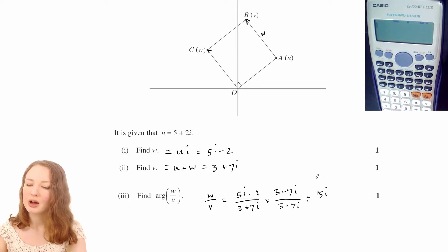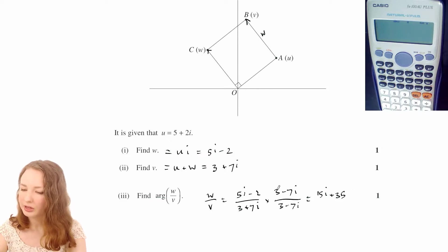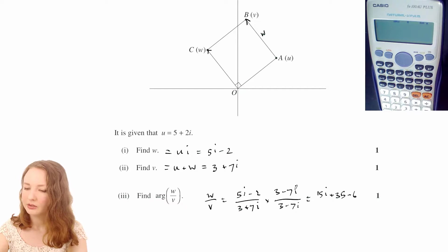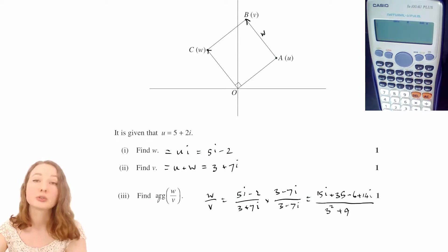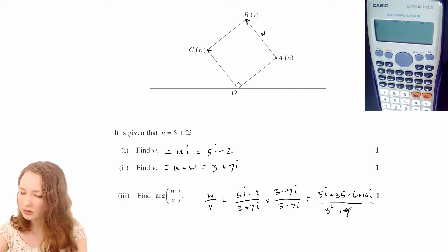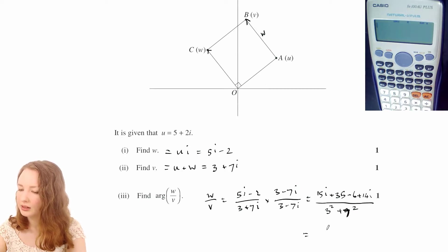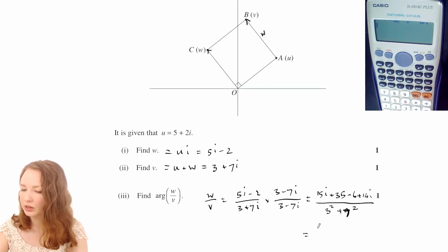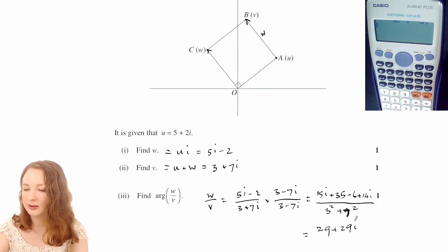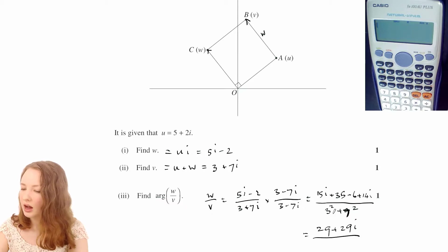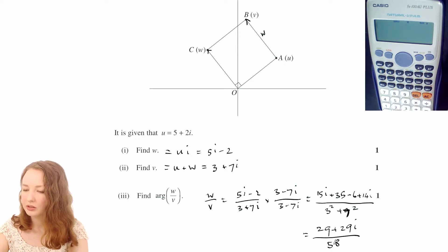And then we have negative 2 times 3, and negative 2 times negative 7i, which is plus 14i. And then on the bottom, it doesn't actually really matter what's on the bottom because it's just going to be a real number, and we're only interested in the argument. So we get 29 plus 29i over 58. So that's actually twice 29, so that's going to make half plus half i.